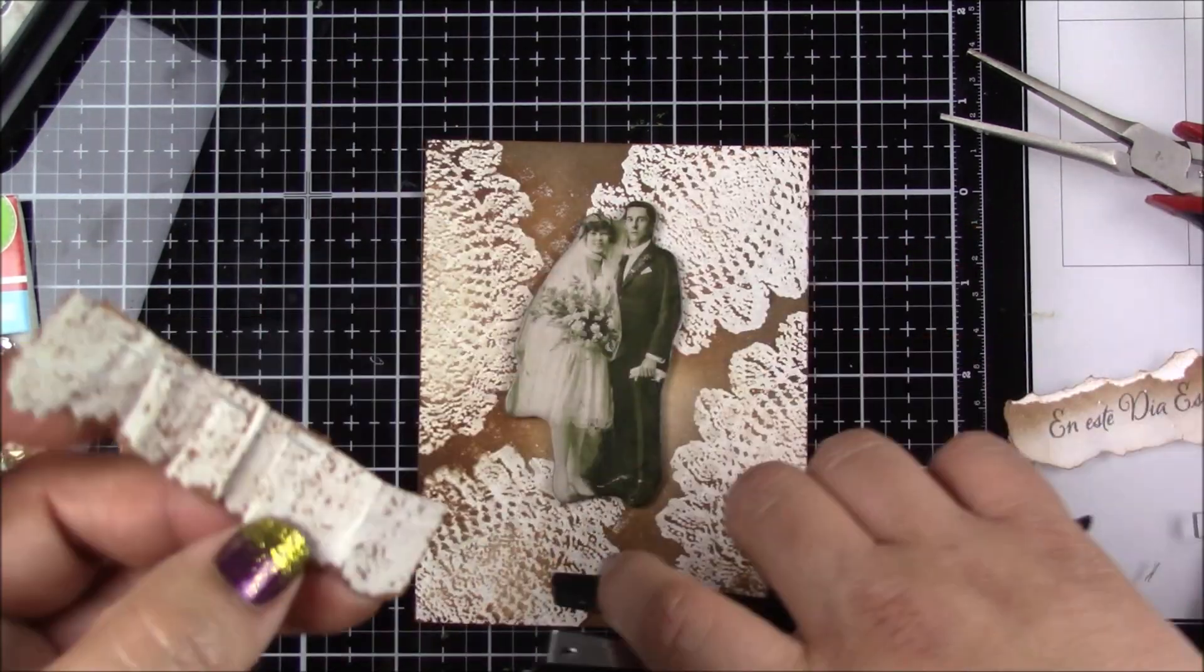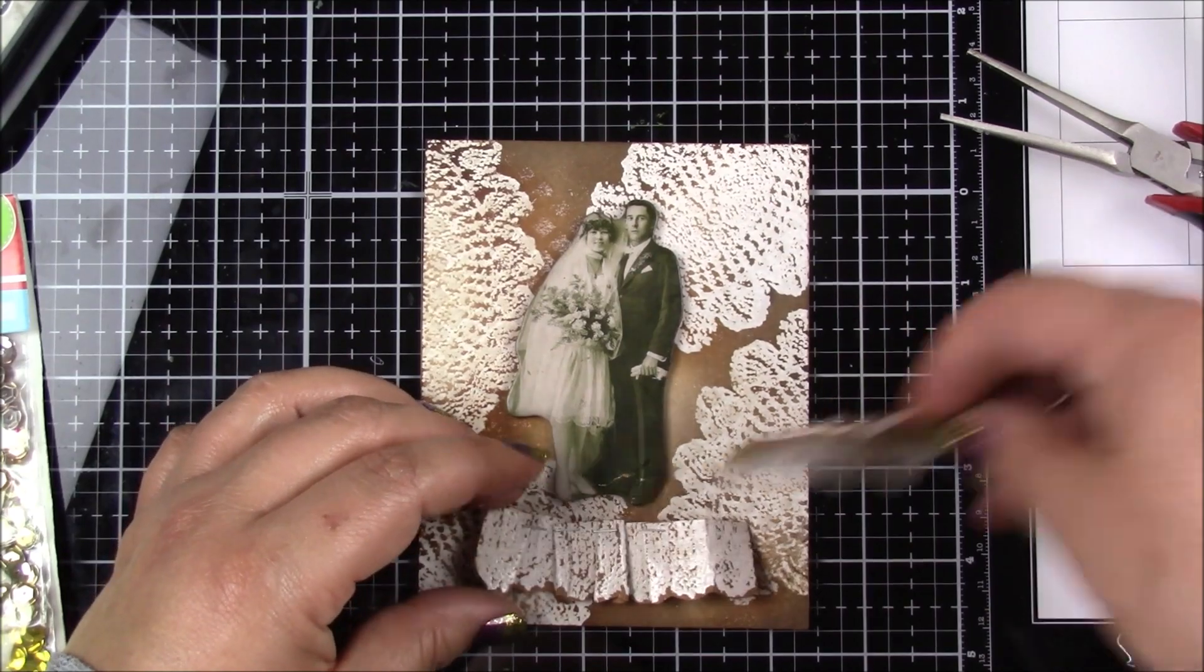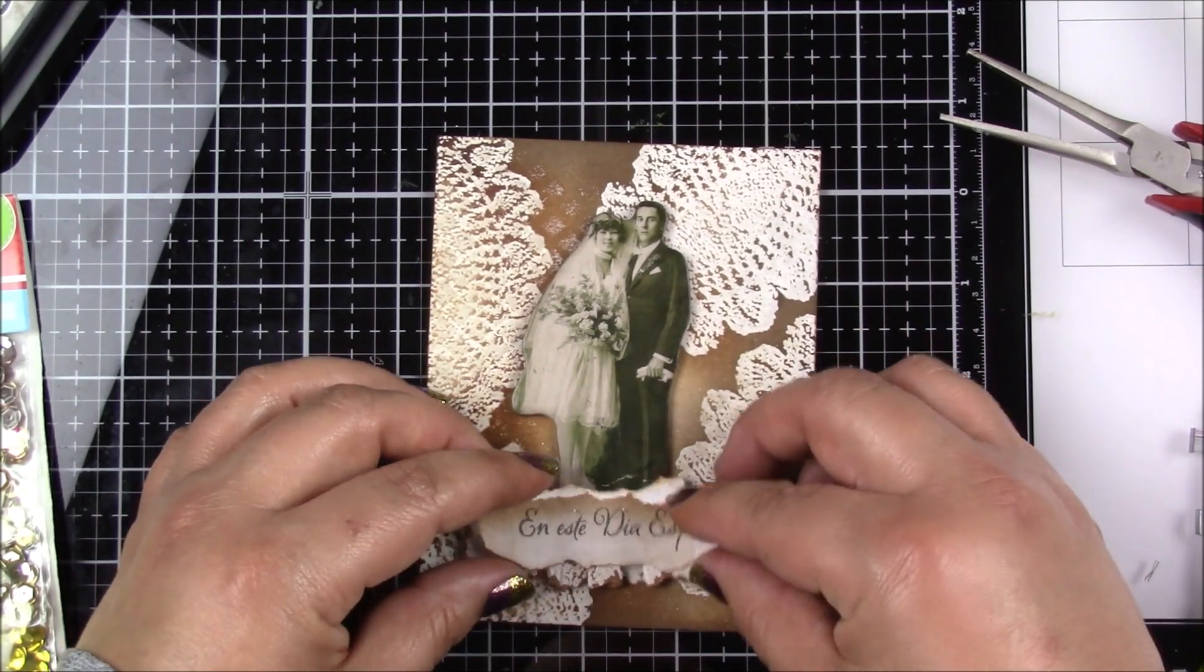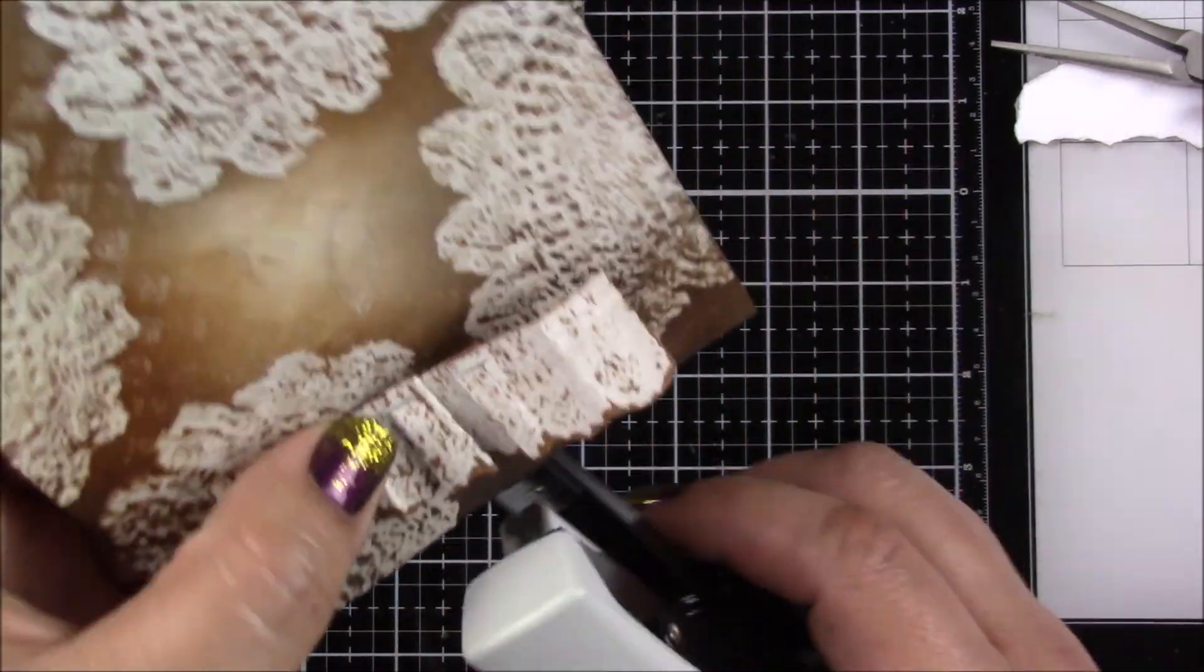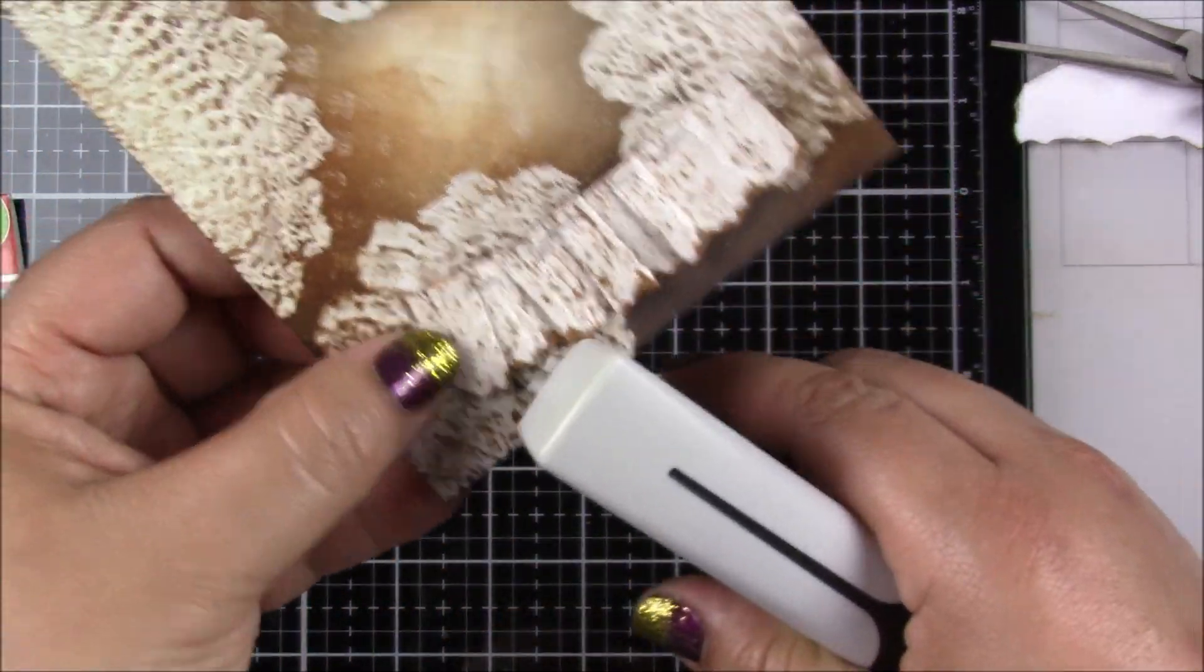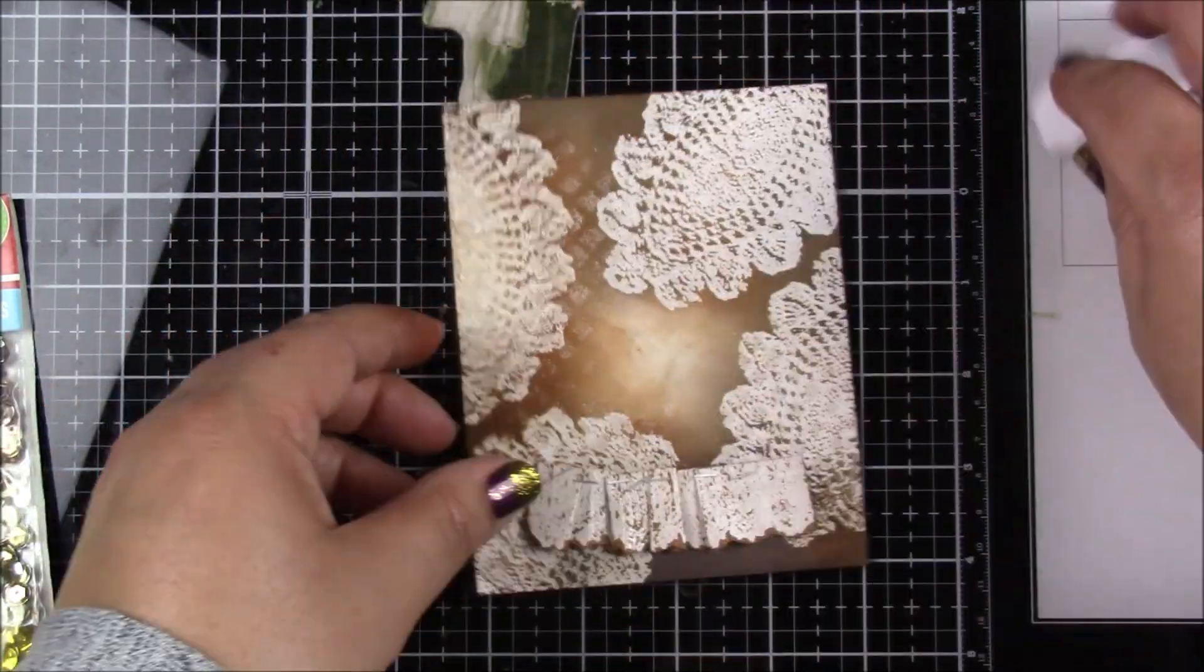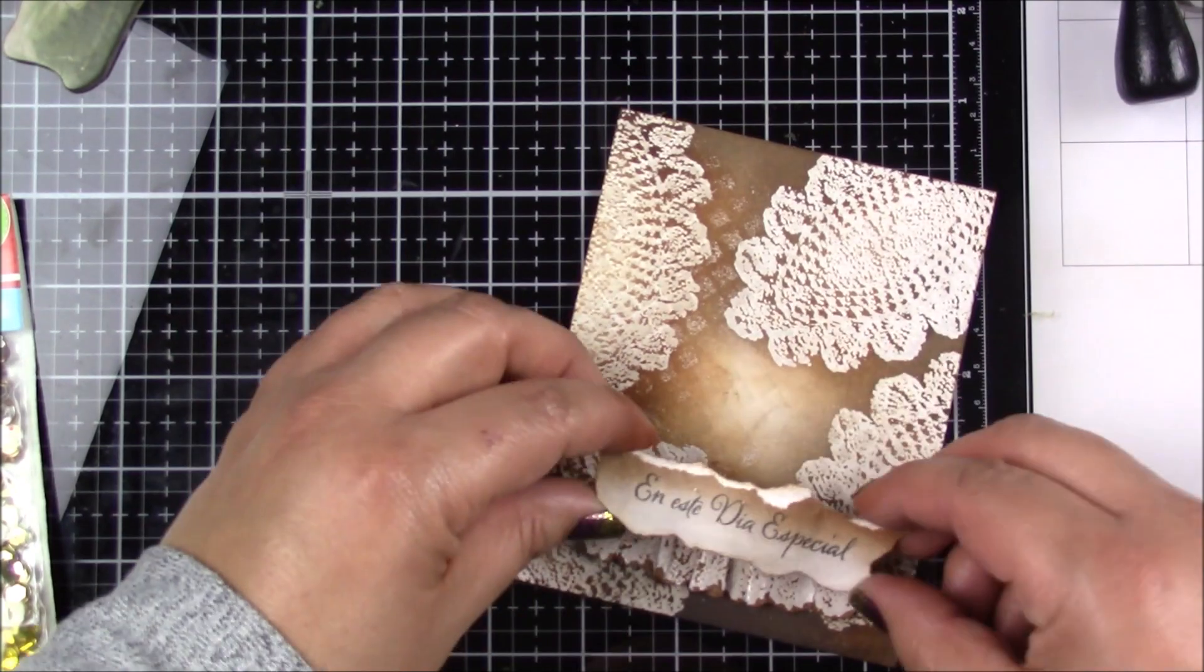I will also add the staples directly into the back panel to hold the little ruffle section. Then I will put the sentiment right on top of that ruffle section, and I will use some glue dots to adhere the sentiment.